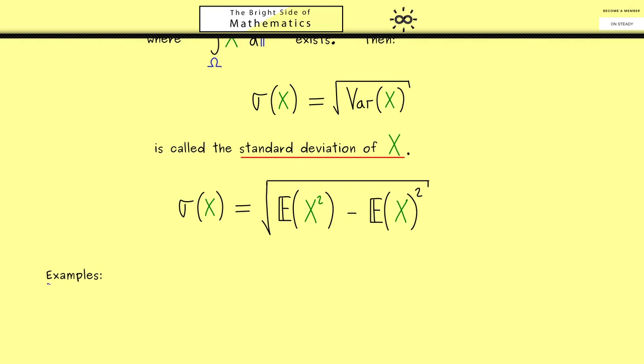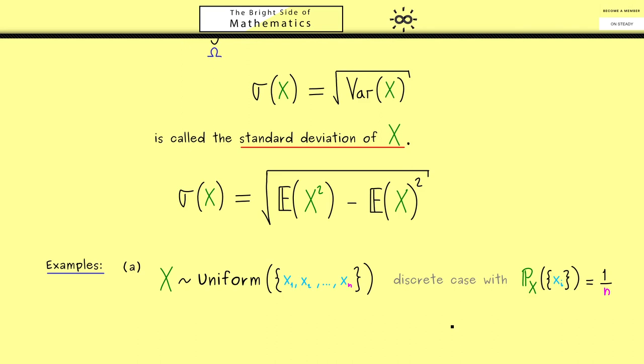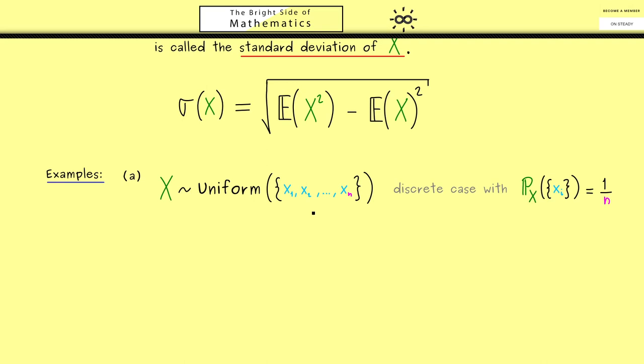First, let's consider the one we discussed in the last video, which was a discrete case with the uniform distribution. You have n outcomes for the random variable, all with the same probability 1/n. Recall we calculated the variance as 1/n times the sum of these squares. This means the square root of this is the corresponding standard deviation. It's always important to remember this formula because this case often occurs.